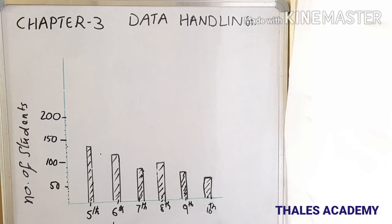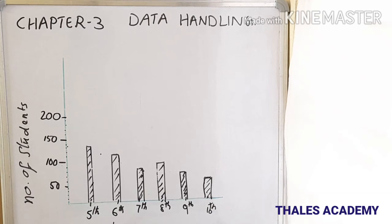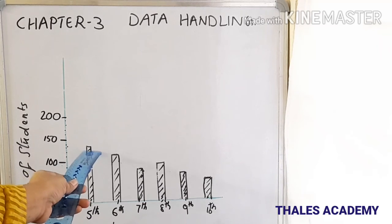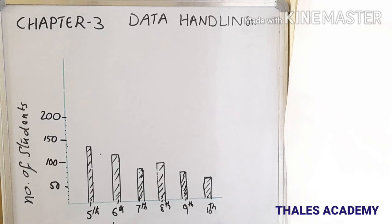In this bar graph, we take one unit as 50 students. Answer the following questions: which class has the maximum number of children and which has the minimum? The maximum number of children is in Class 5, that is 135 students. The minimum number of students is in Class 10, with 80 students.